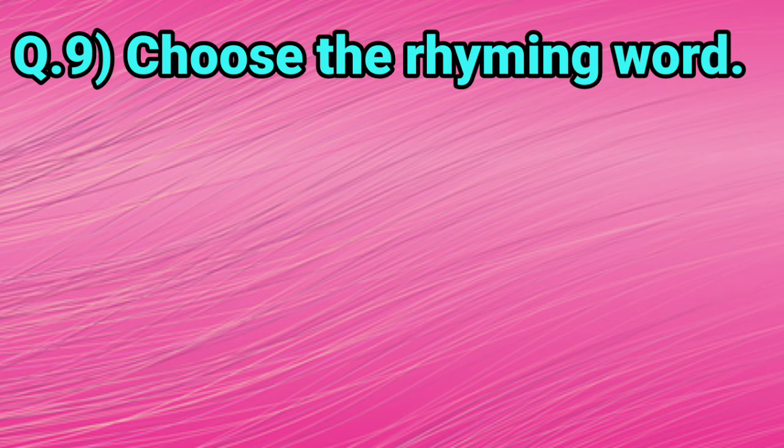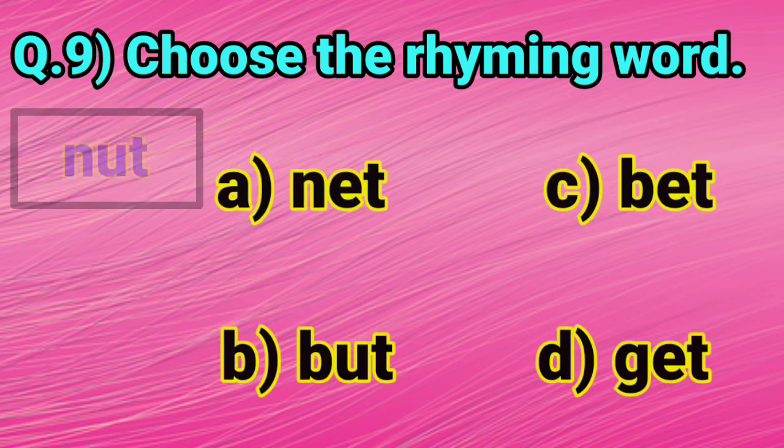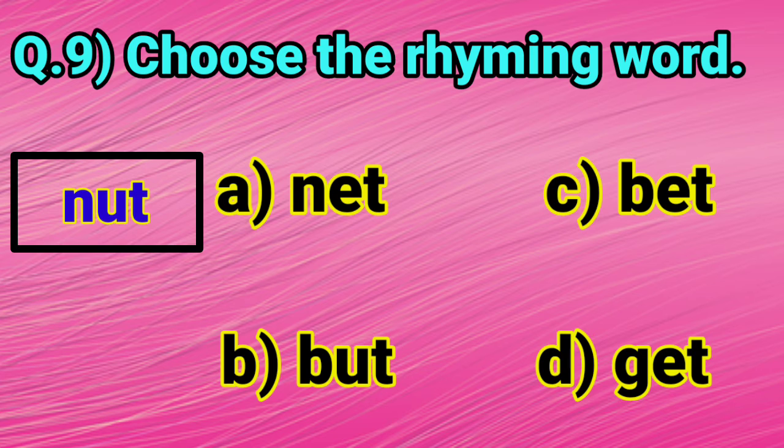Let's do the next question. Question number 9. Choose the rhyming word. Nut. Let's read the options. Option A, net. Option B, but. Option C, bet. Option D, get.